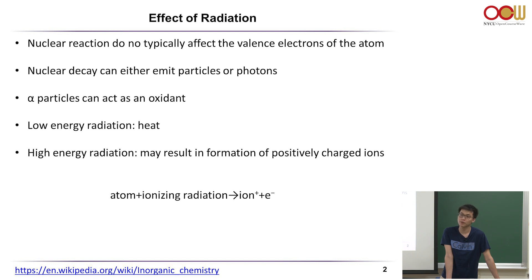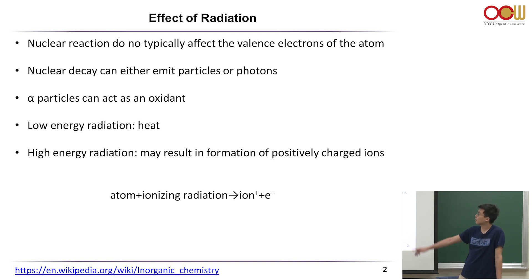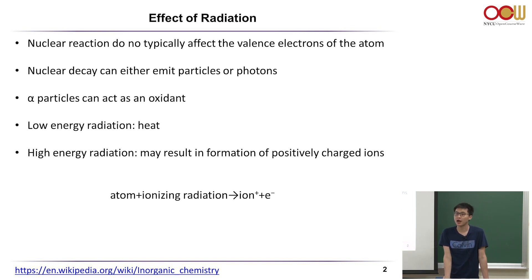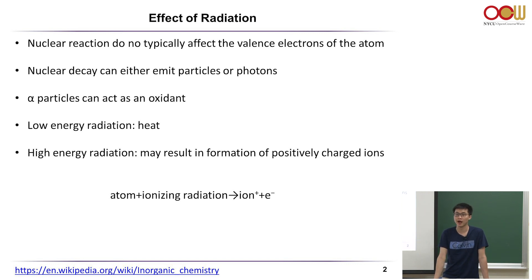Low energy radiation is usually not dangerous. We are exposed to radiation constantly, but small amounts are usually harmless. It really has to do with the intensity of the radiation. Higher energy radiation results in the formation of positive charge ions, and such ions can undergo other chemical reactions involving valence electrons of other matter.